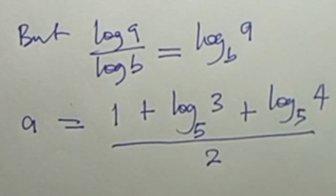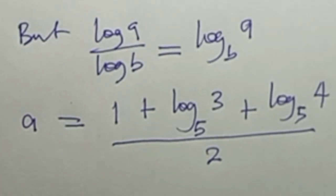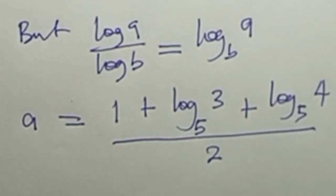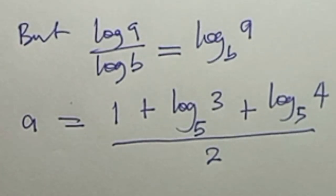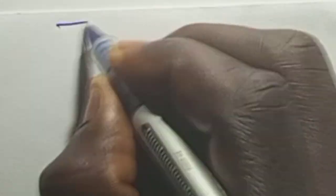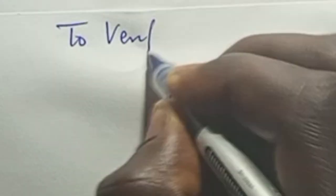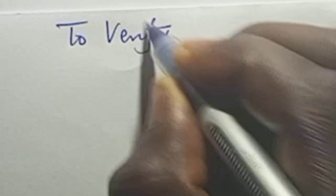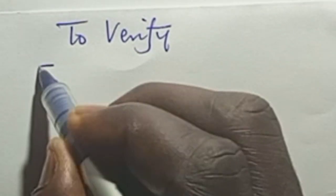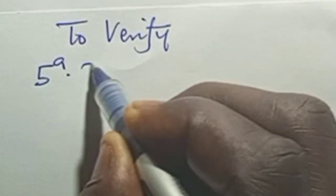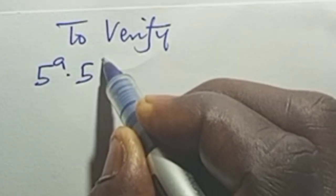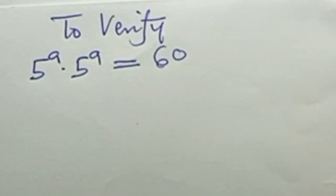And this is our value for a. We can verify this to check if a satisfies the equation: 5 raised to the power a times 5 raised to the power a equals 60.